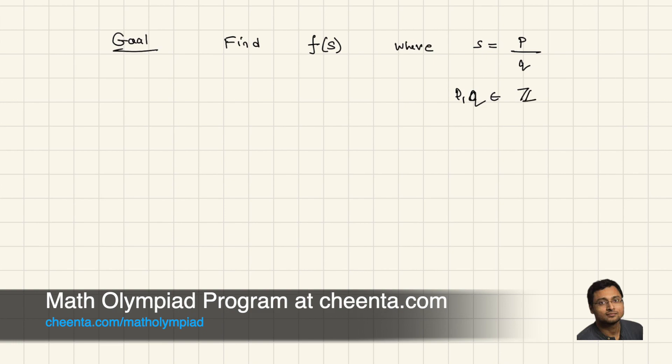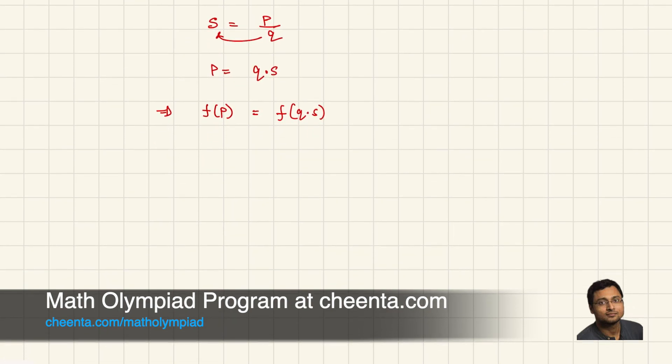Okay. So, let's try that. Firstly, we will use this expression S equals P over Q. Let's cross multiply and P is equals to Q times S. I just cross multiplied it. Now, let's find out f(P). That must be equal to f(Q times S).